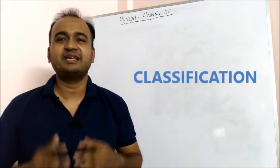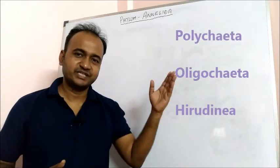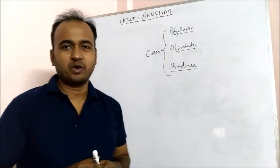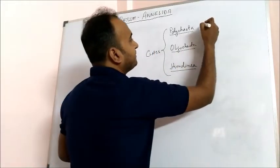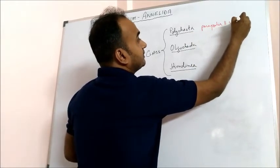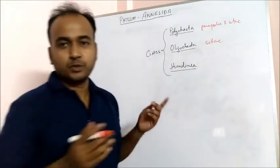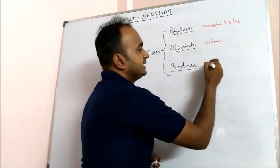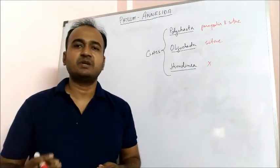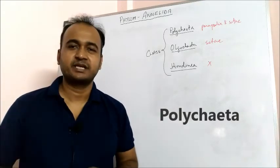Phylum Annelida consists of three classes: Polychaeta, Oligochaeta, and Hirudinea. They are classified depending on the locomotory organ. In Polychaeta, both parapodia and setae are present. In Oligochaeta, only setae are present but no parapodia. In Hirudinea, there are no parapodia and no setae — they locomote using muscular activity of their body.